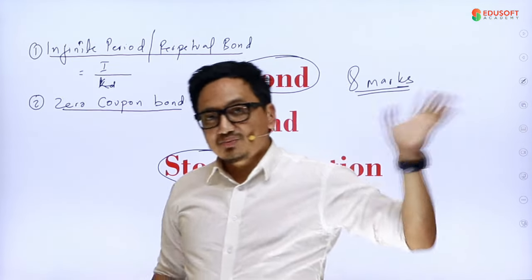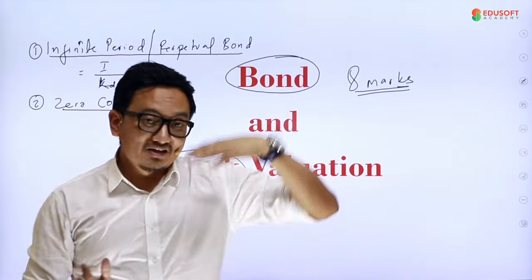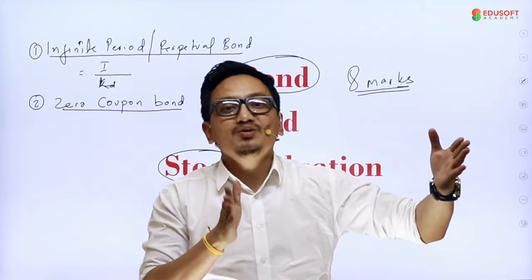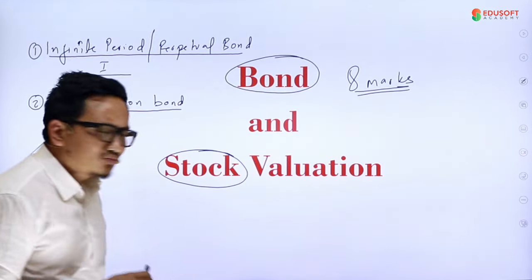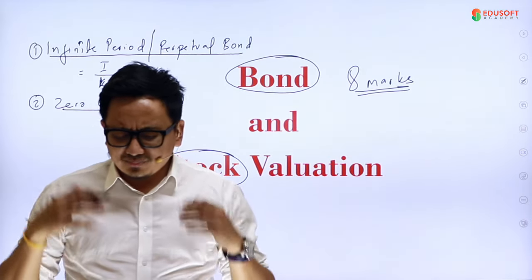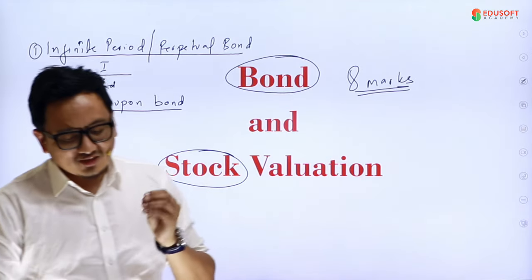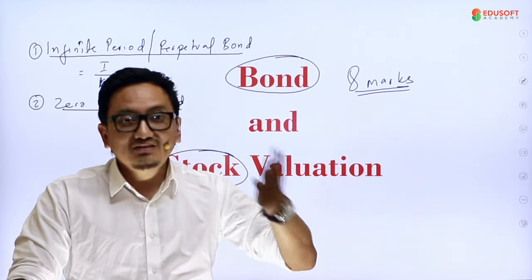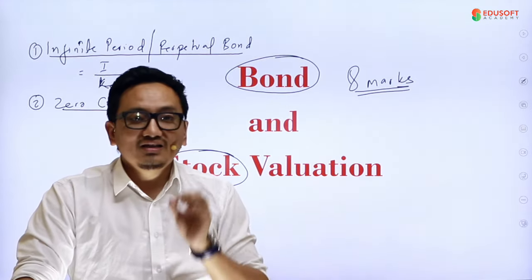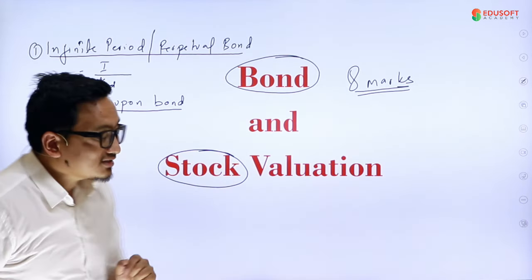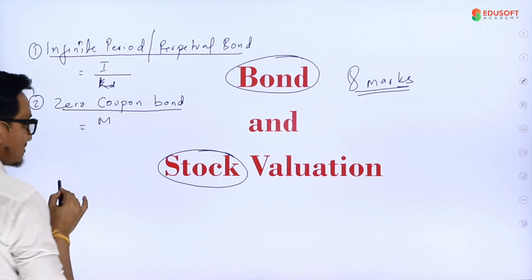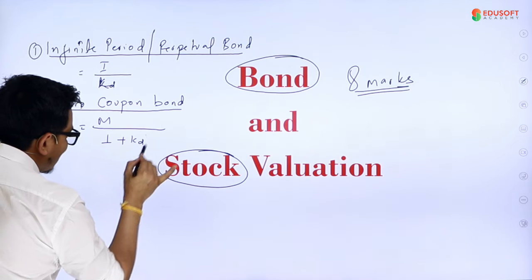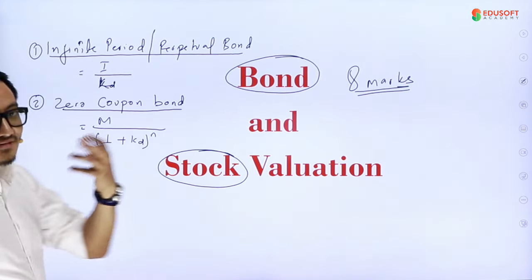For example, if you have a bond of 1000 rupees, you might pay 500 or 300 for it now. The value of a zero coupon bond is the maturity amount divided by (1 plus kd) raised to the power n, where kd is the cost of debt and n is the number of years.